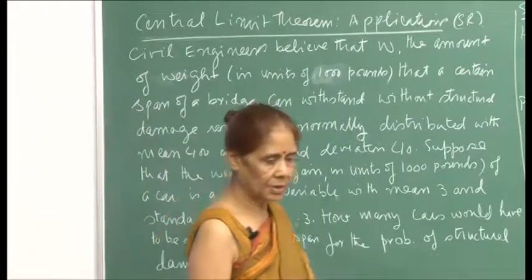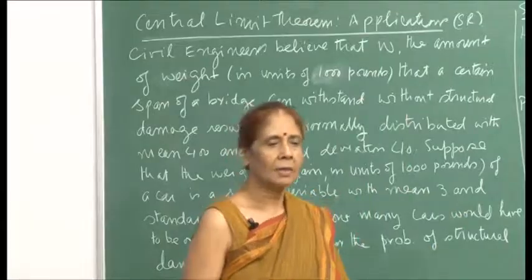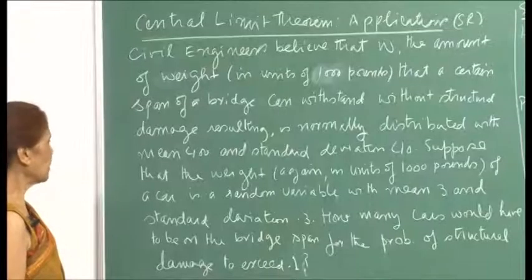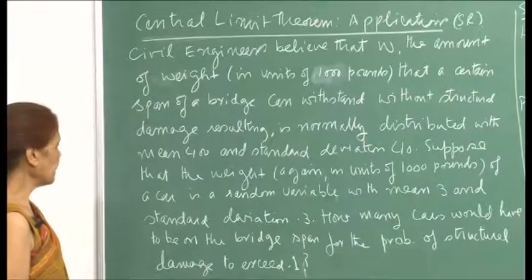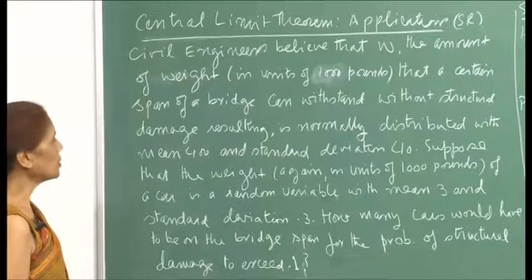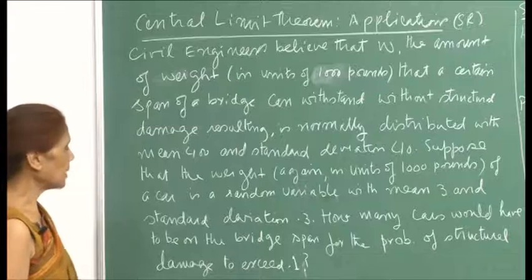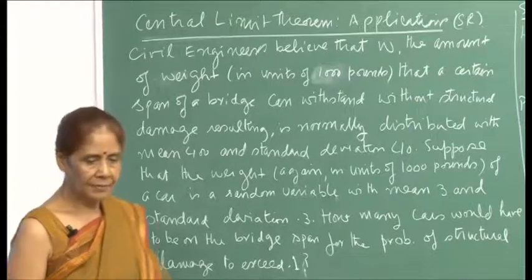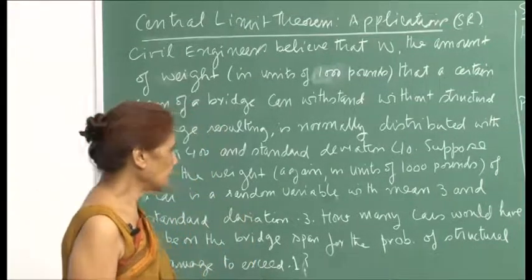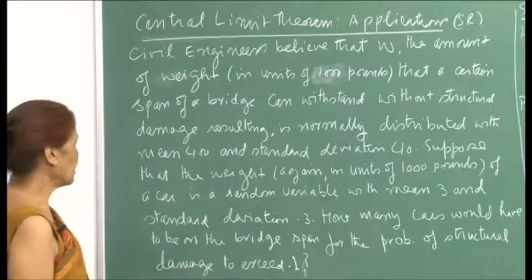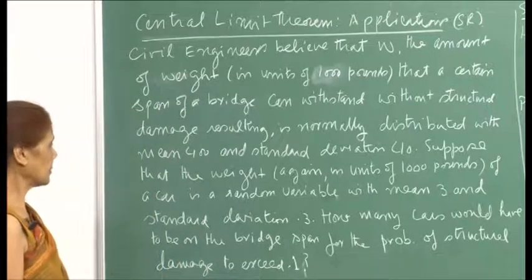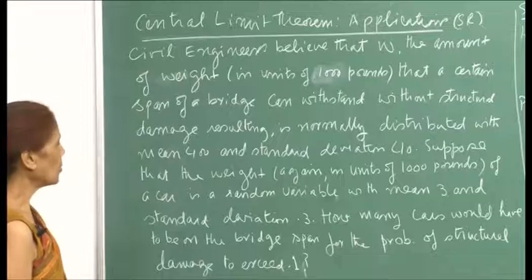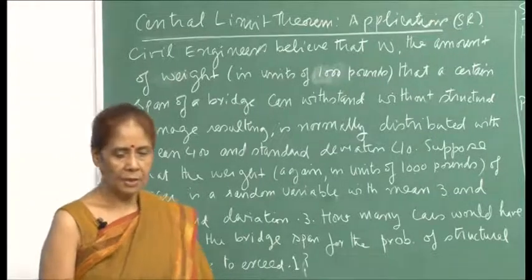The weight which the bridge can withstand is a random variable, normally distributed with mean 400 and standard deviation 40. Suppose that the weight, again in units of 1000 pounds, of a car is a random variable with mean 3 and standard deviation 0.3. Different cars will have different weights, so the weight of a car is treated as a random variable with approximately normal distribution with mean 3 and standard deviation 0.3.